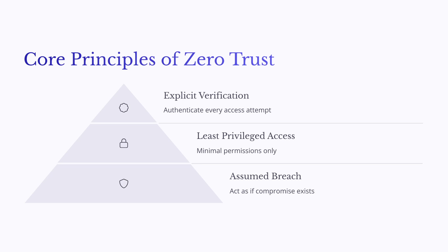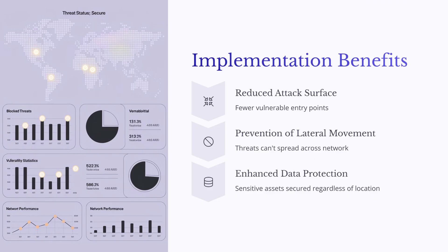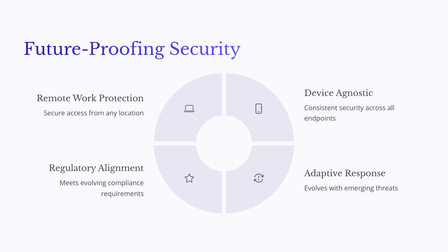The key components of a Zero Trust architecture include: micro-segmentation, dividing the network into small zones to maintain separate access for different parts; multi-factor authentication (MFA), requiring multiple forms of verification; continuous monitoring and validation with real-time assessment of security posture and anomaly detection; and policy-based least privilege access, restricting user rights to minimum necessary permissions. By implementing these components, organizations can significantly reduce their attack surface, prevent lateral movement of threats, and protect sensitive data — aligning well with the SASE model.